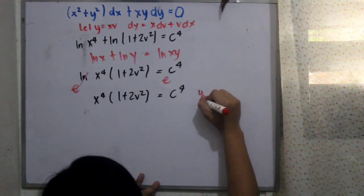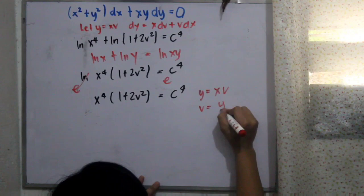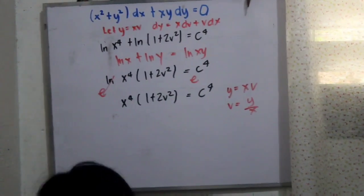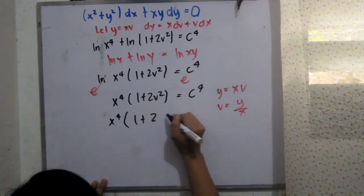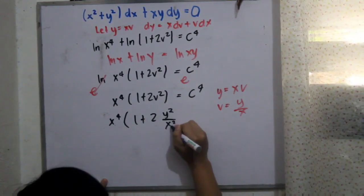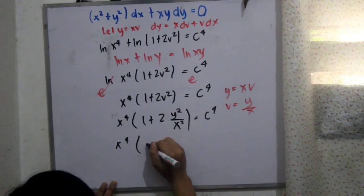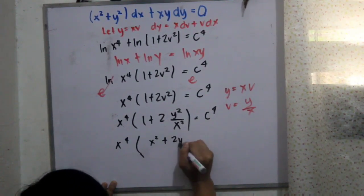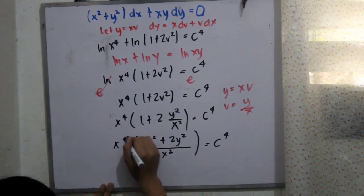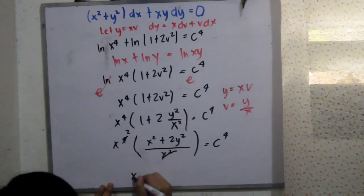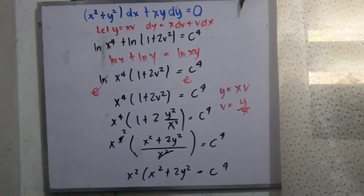Since y equals xv, we know v equals y over x. Substituting v equals y over x back in, we get x raised to 4 times 1 plus 2y squared over x squared equals c raised to 4. Simplifying, we have x squared plus 2y squared all over x squared equals c raised to 4, and multiplying through by x squared gives x squared times x squared plus 2y squared equals c raised to 4. This is our final answer.